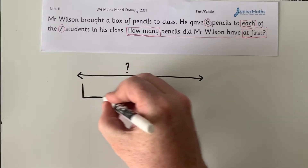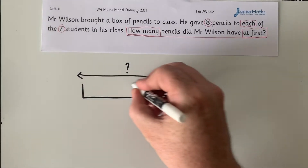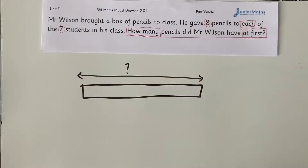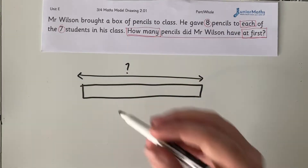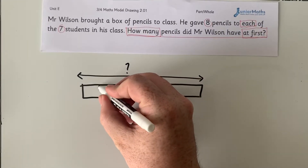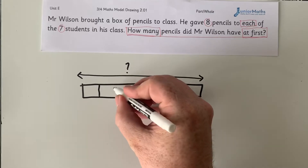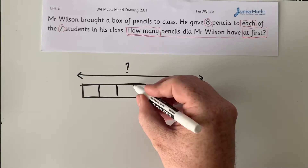Now, we draw a bar model representing that total. There were seven students, so we need to divide that bar into seven equal parts.